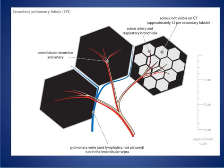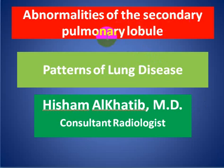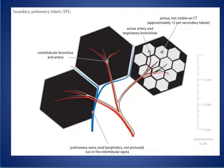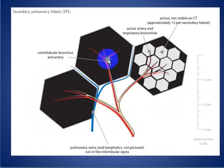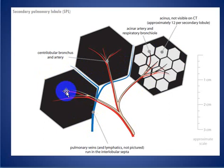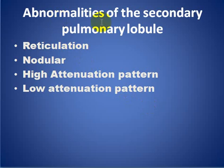My topic today is about abnormalities of the secondary pulmonary lobule — diseases involving the secondary pulmonary lobule. As we discussed in the previous talk, the secondary pulmonary lobule has a central arteriole and central bronchiole, with the veins and lymphatics in the periphery. Abnormalities involving the secondary pulmonary lobule include increased reticulation, nodular pattern, high attenuation pattern, and low attenuation pattern.